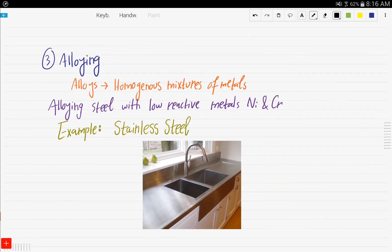The third rust prevention method is alloying. You have to understand that alloys are homogeneous mixtures of metals. Alloying steel with low reactive metals like nickel and chromium would reduce the probability of it rusting to a great extent.